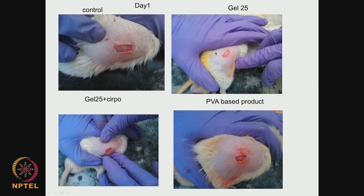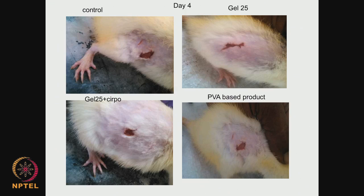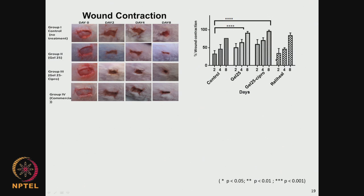Pictures show the wounds on control without treatment, with the carrageenan and cyclic glucan, with carrageenan, cyclic glucan and ciprofloxacin, and with the commercial product at different time periods - day 1, day 4, day 7. We can quantify the wound contraction area. With ciprofloxacin hydrogel, wound contraction is very, very high and fast - within 2 days we find very high wound contraction compared to the control or commercial product, and the contraction rate increases dramatically by day 8 compared to the control.